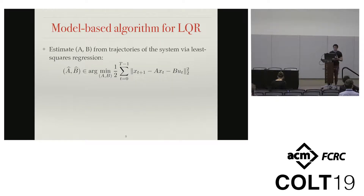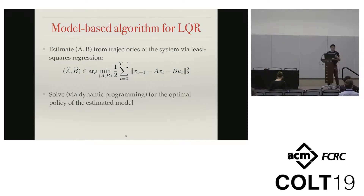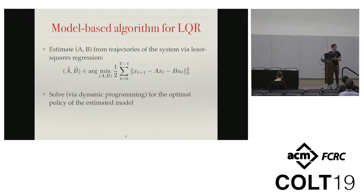Let me describe the model-based algorithm. It's a very simple two-step procedure: first we estimate the dynamics from rollout data — we collect trajectories and fit the transition model using something like least squares. Then we take the estimates and solve using dynamic programming for the optimal policy of the estimated model. In controls, this is known as the certainty equivalence principle. You might object that this has robustness issues with finite data, but since we're doing asymptotic analysis, we'll ignore those robustness issues and roll with certainty equivalence for now.